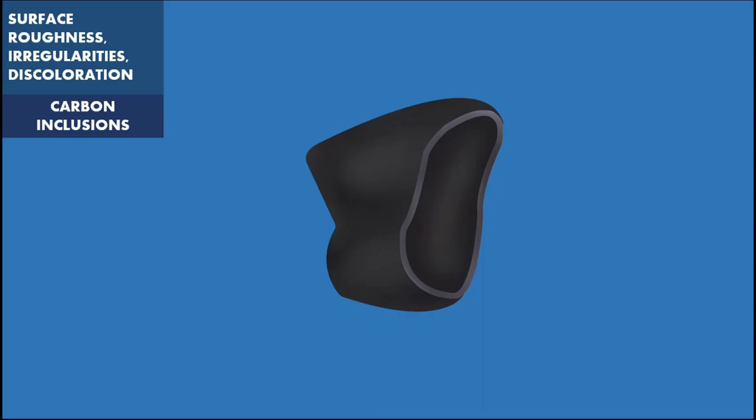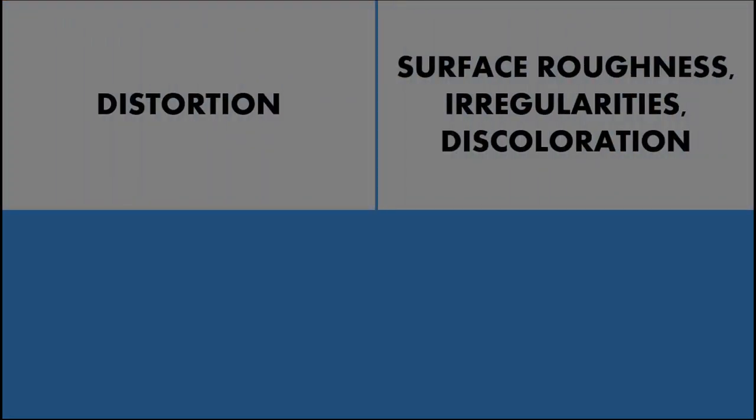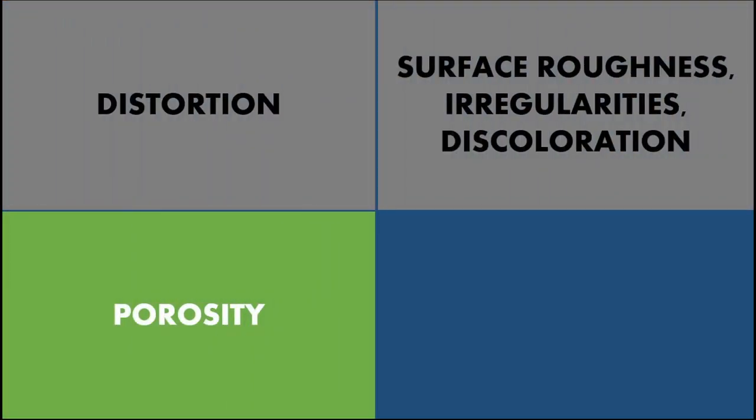These are the casting defects which manifest as surface roughness, irregularities or discoloration. Now let's see about the next major group of casting defects called porosities.